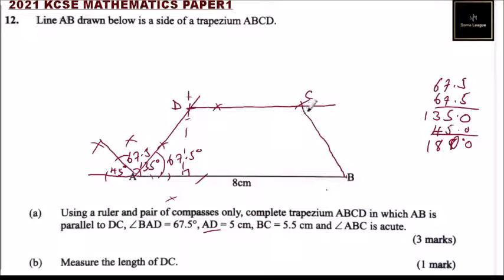So that's how you come up with the trapezium ABCD. And of course here, we use this point because we are told that angle ABC is acute, it is less than 90. Because if you draw it the other side, angle ABC will be obtuse angle. So that's how you are supposed to construct that.